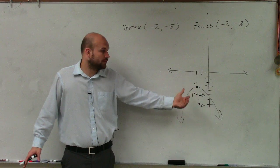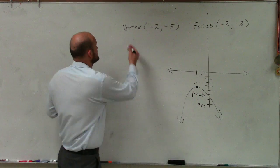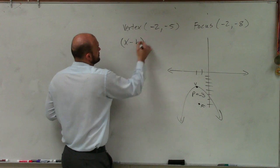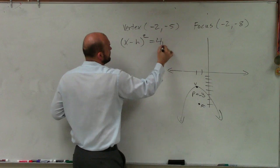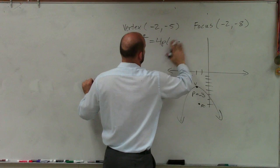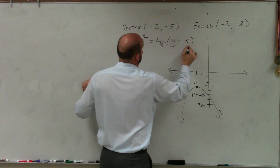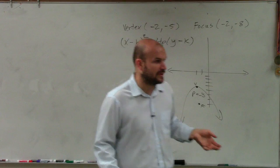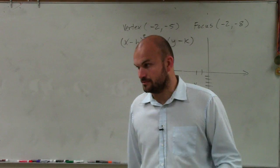So we now know the graph faces down. So that means we have to use the equation where it goes up or down, which is x minus h squared equals 4p times y minus k. That's the equation for when we have a parabola that opens up or down, correct?